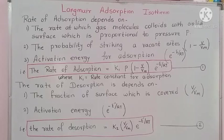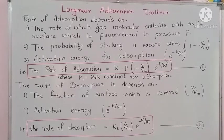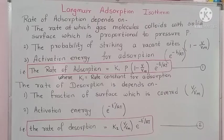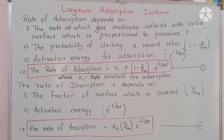The rate of desorption depends on the fraction of the surface which is covered, denoted by V/Vm, and the activation energy for desorption, expressed as e raised to minus E′ upon RT, where E′ is the activation energy for desorption. Therefore, the rate of desorption equals k₂ × (V/Vm) × e^(−E′/RT), where k₂ is the rate constant for desorption.